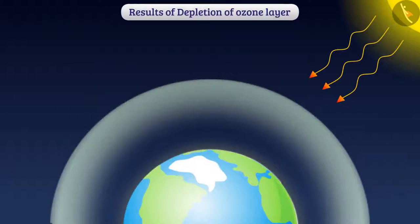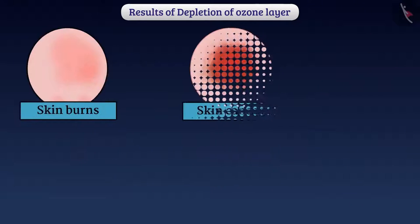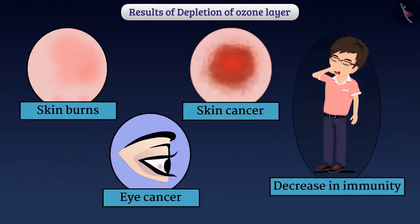If the ozone layer becomes too thin, then the sun's ultraviolet radiation will come into direct contact with the organisms and cause serious problems such as skin burns, skin cancer, eye cancer, decrease in immunity, etc.